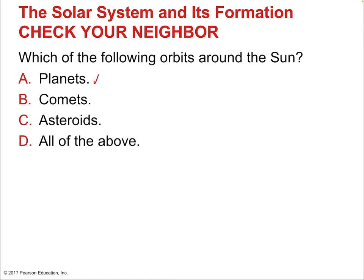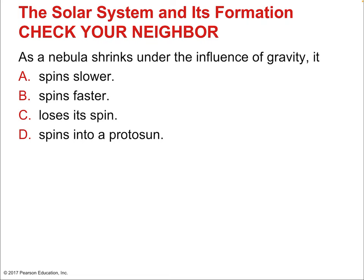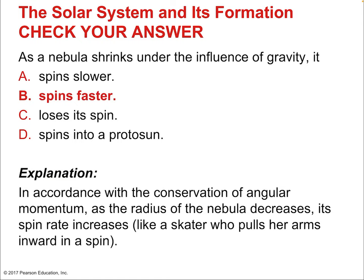Everything in the solar system either orbits around the sun or orbits around something that orbits the sun — like a moon orbits a planet, which orbits the sun. According to the nebular theory, as a nebula shrinks under the influence of gravity, it spins faster — conservation of angular momentum. As it becomes smaller, it spins faster. The protosun forms from the collapse and condensing of matter; the increase in spin is independent — that's conservation of angular momentum.